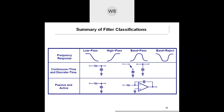This is a summary of various classifications: based on frequency response, based on active or passive, and based on discrete or continuous time. For a continuous time filter, the input is available all the time. For a discrete time filter, the input is fed to the circuit only at certain discrete points — for example at times t1, t2, t3 — sensed with the help of a switch at those discrete moments.